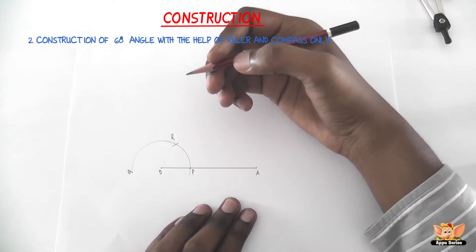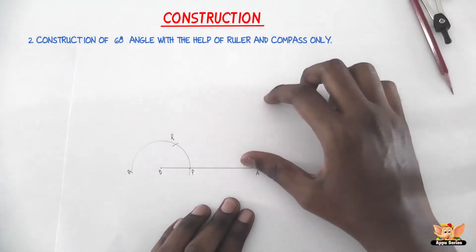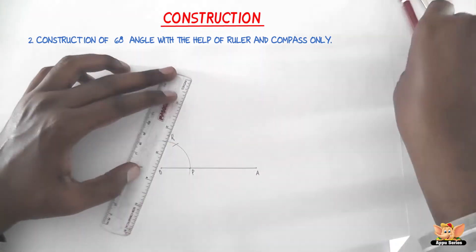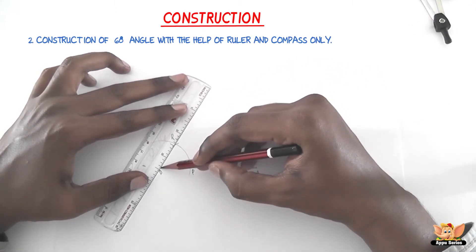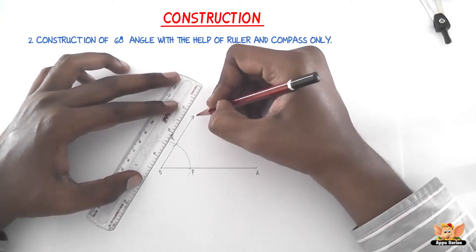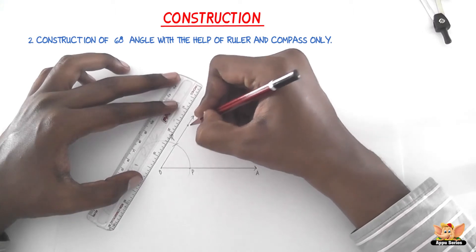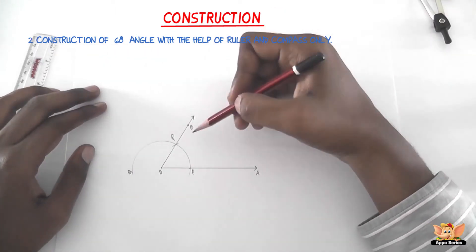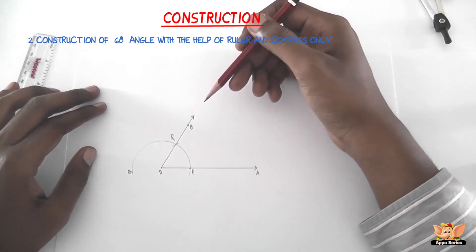Now join OR and produce it to obtain a ray OB. So the angle AOB so obtained is the angle of measure 60 degrees.